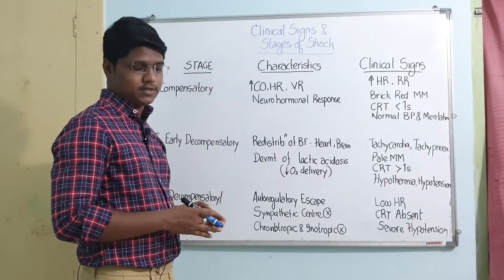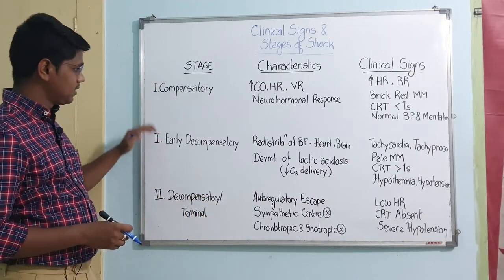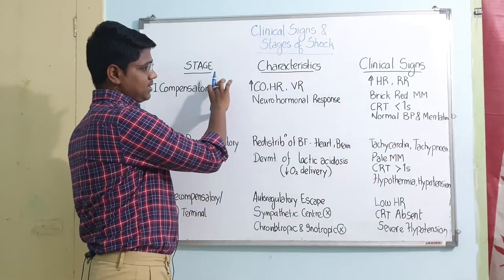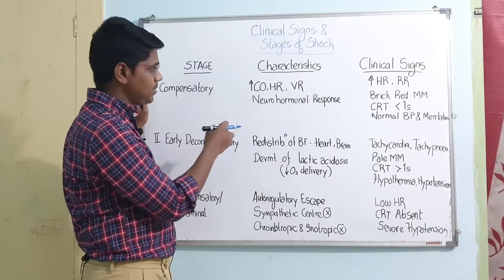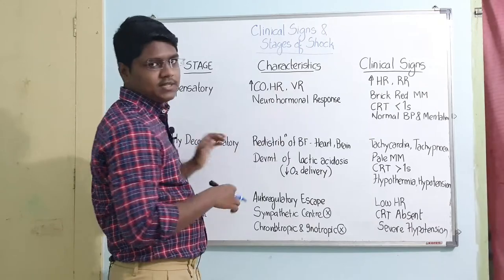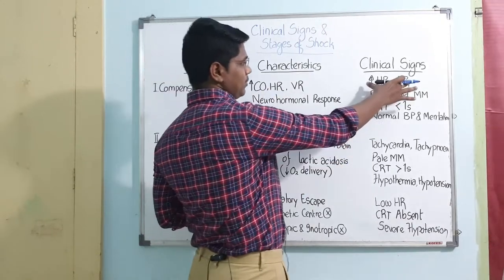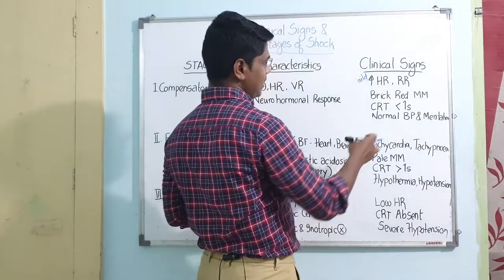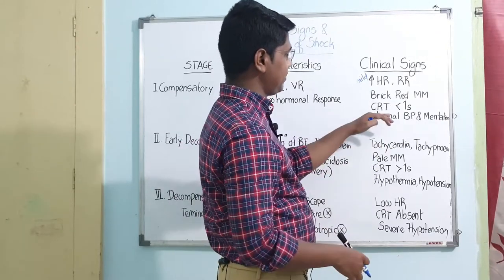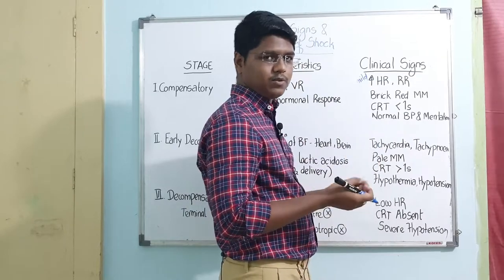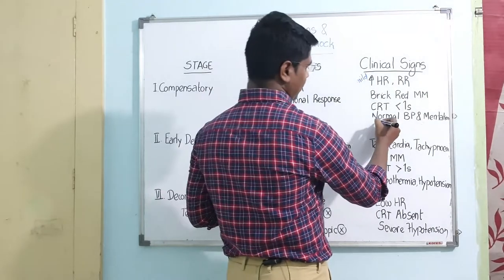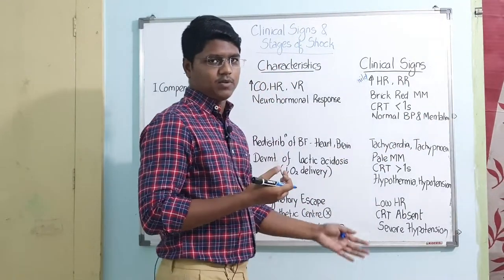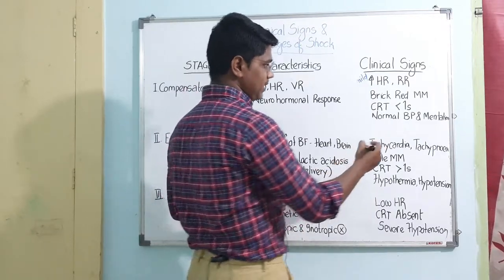Now the clinical signs and stages of shock. There are mostly three stages: compensatory, early decompensatory, and decompensatory or terminal. In the compensatory stage, the body responds to shock through the neuro-hormonal response discussed previously. There will be an increase in cardiac output, heart rate, and vascular resistance (vasoconstriction). Clinical signs include a mild increase in heart rate and respiration rate. The mucous membranes will be brick red in color, the capillary refill time (CRT) will be less than one second, blood pressure will be normal, and the mental state of the animal will be fine.